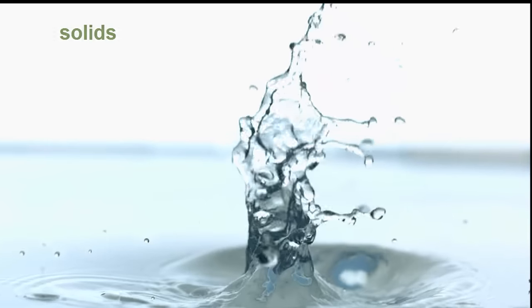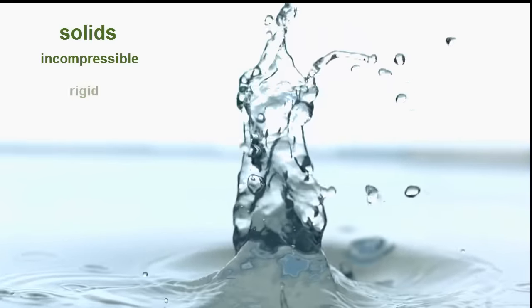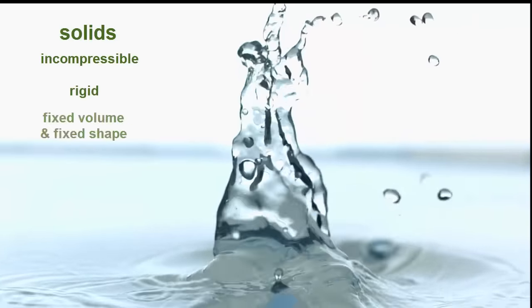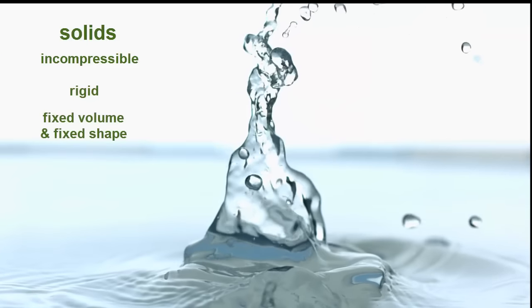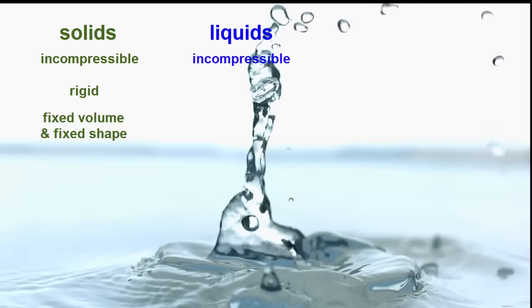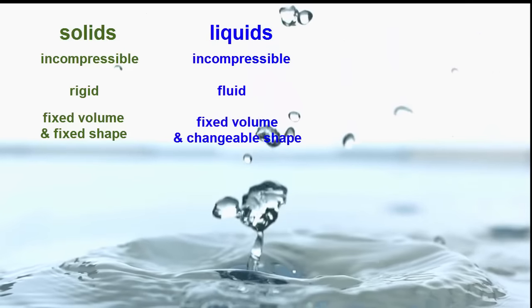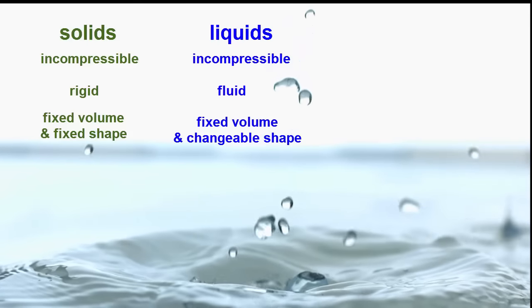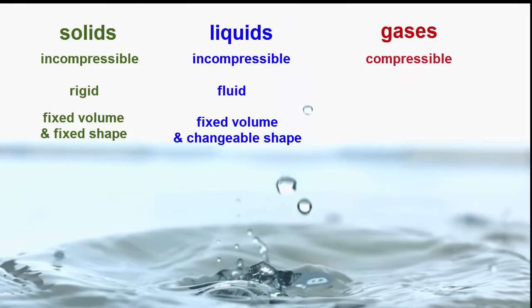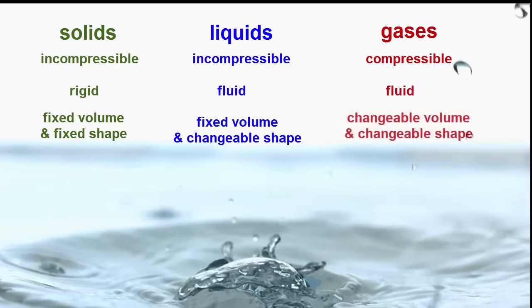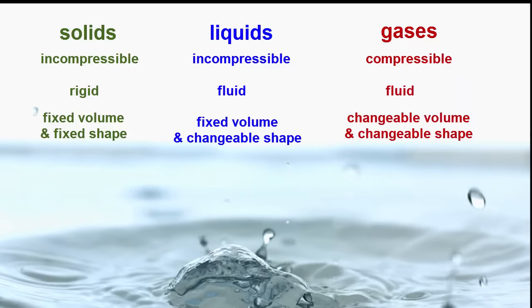In the last video we saw that solids are incompressible and rigid. They've got a fixed volume and shape. Liquids are incompressible but fluid. They've got a fixed volume but a changeable shape. And gases are compressible as well as fluid. They've got a changeable shape as well as a changeable volume.